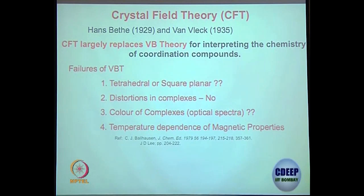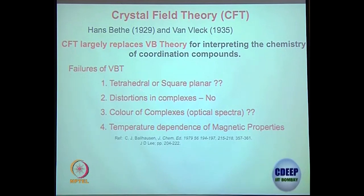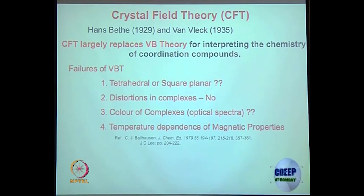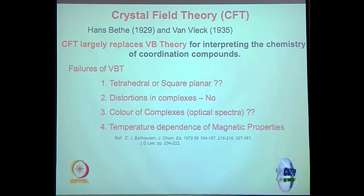Crystal field theory has tremendous limitations as well, but we may not be talking about those. What we are saying is that valence bond theory really cannot explain tetrahedral and square planar geometries. Any distortion — bond elongation or shortening — cannot be explained by valence bond theory. In a moment you will see how distortion is explained by crystal field theory. Color of complexes also cannot be predicted by valence bond theory, but crystal field theory can explain it.